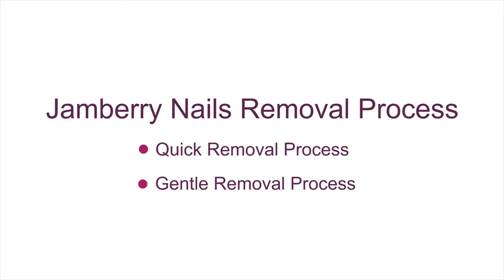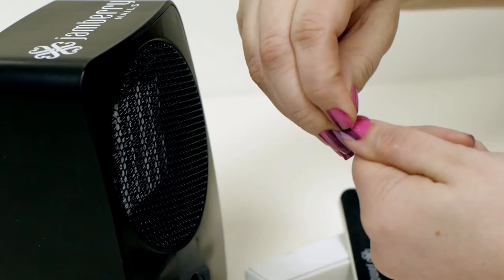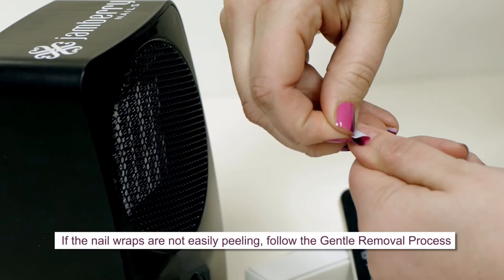For the quick removal process, simply heat the nails with a mini heater for five to ten seconds. Then break the seal by getting the wrap off your nail using an orange stick or your opposite thumbnail, moving from one side to the other.